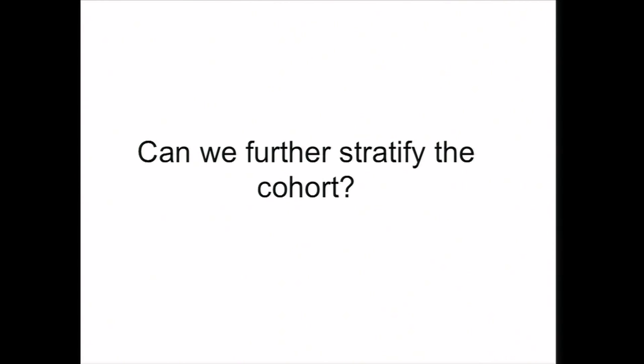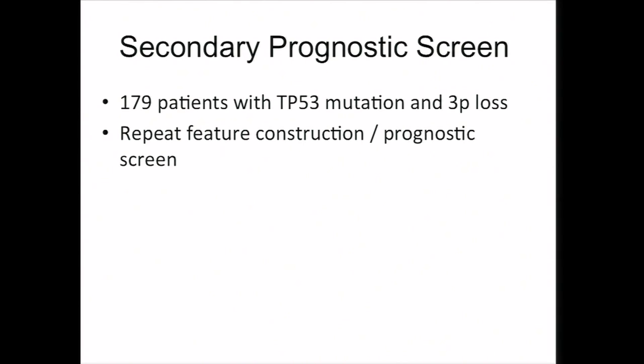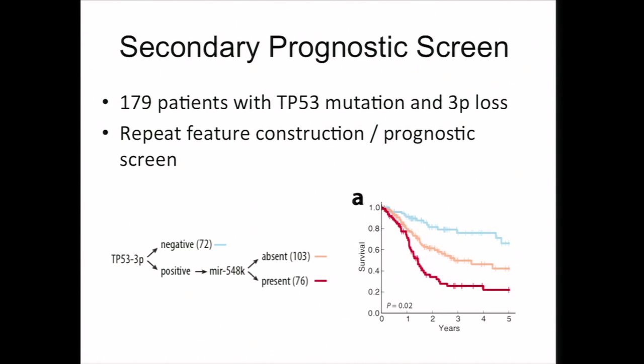Having established this combination of events in head and neck cancer, the next question was whether we can further stratify the patient cohort. We repeated our screen from feature construction to prognostic screening. Among the poorly performing group — patients with the combination of events — the presence of microRNA MIR548K leads to even worse prognosis within those patients.